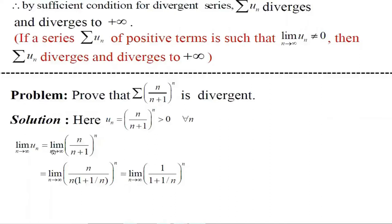The limit of u_n equals the limit of (n/(n+1))^n as n tends to infinity. Normally we eliminate n by getting a factor of 1/n. In the denominator, we take n out to get n(1 + 1/n), so the n's cancel. That equals the limit of (1/(1 + 1/n))^n as n tends to infinity.